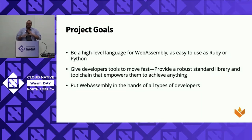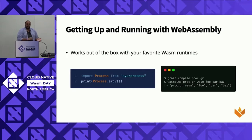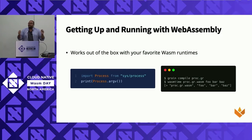We want to put WebAssembly in the hands of all types of developers — not just those who are willing to get down and dirty with pointers. Getting up and running with Grain: you can just go to our website, download a binary, and write your first Grain program. You can write a Hello World, whatever you want. This example is just printing out the command line arguments. That's it — pretty simple.